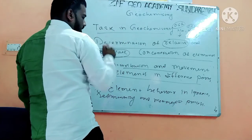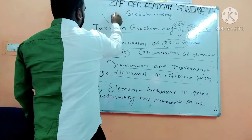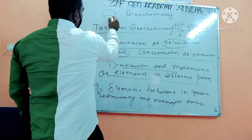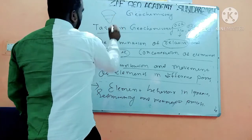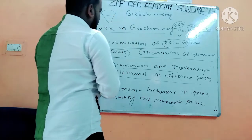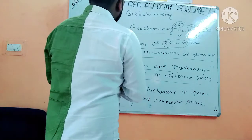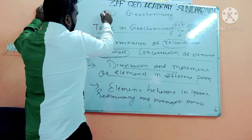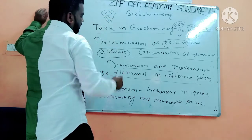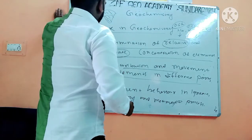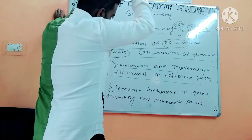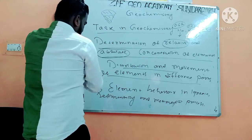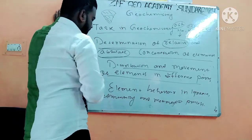The second task is the distribution and movement of elements in different parts of the Earth. We know the Earth has a crust, mantle, and core, so we have to determine with the help of geochemistry what elements are present in each of these layers.